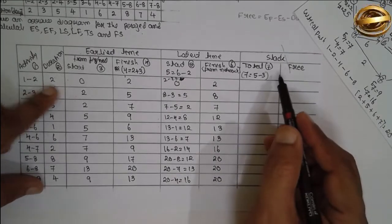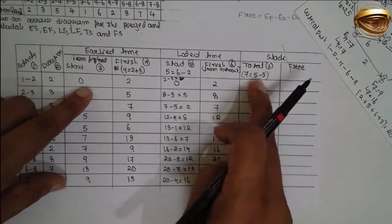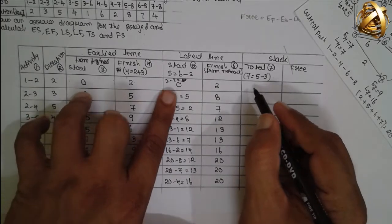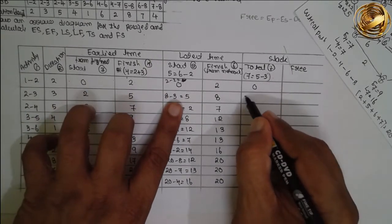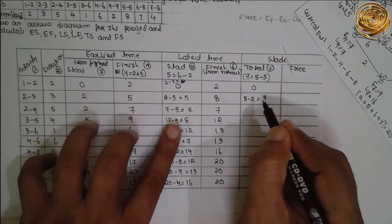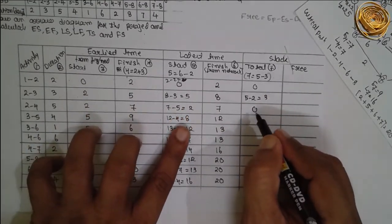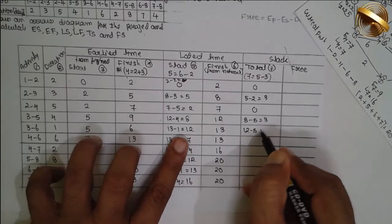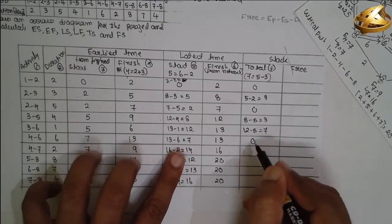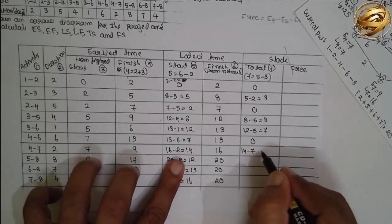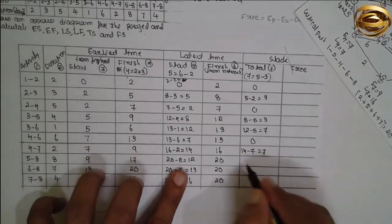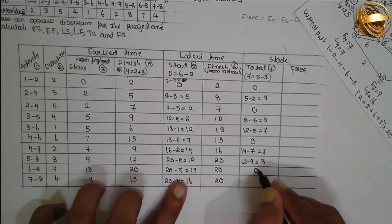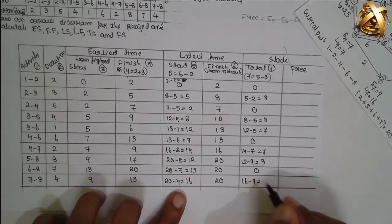Total slack equals latest finish minus earliest finish, or equivalently latest start minus earliest start. Values: 0, 3, 0, 3, 7, 0, 7, 3, 0, 7. Activities on the critical path have total slack of zero.